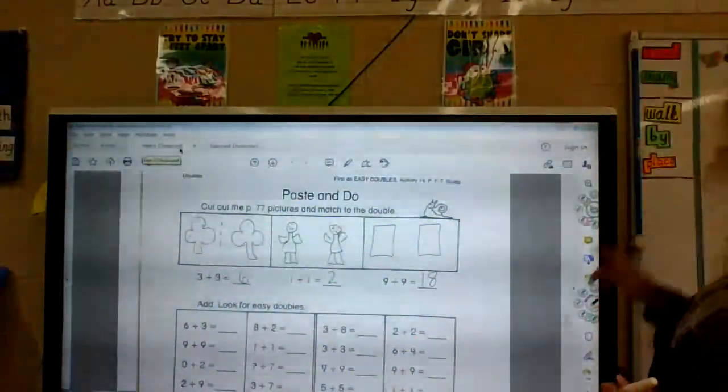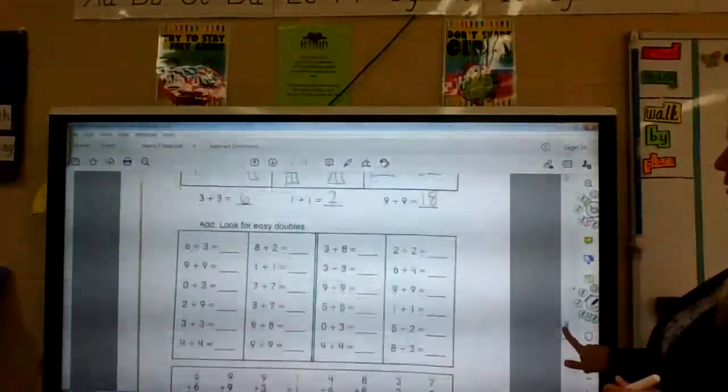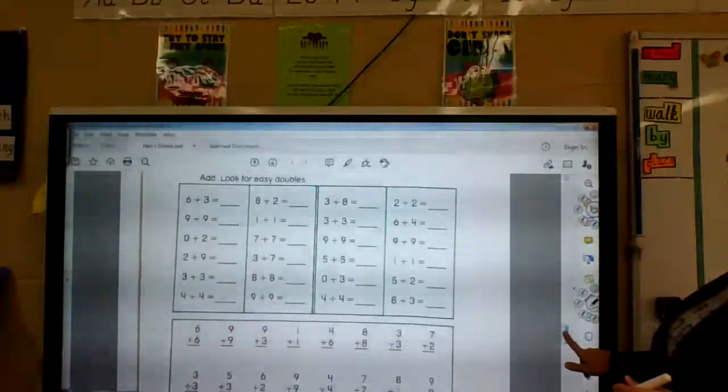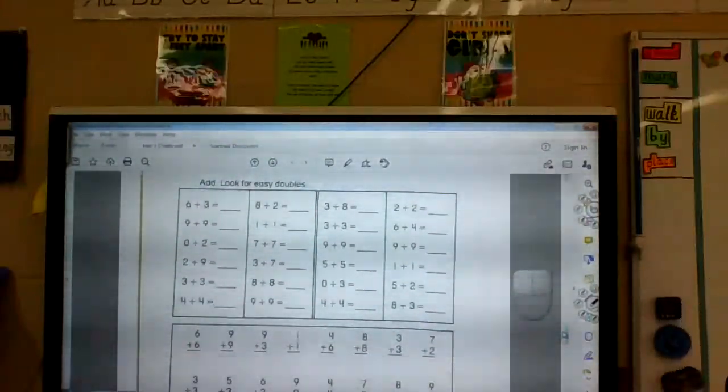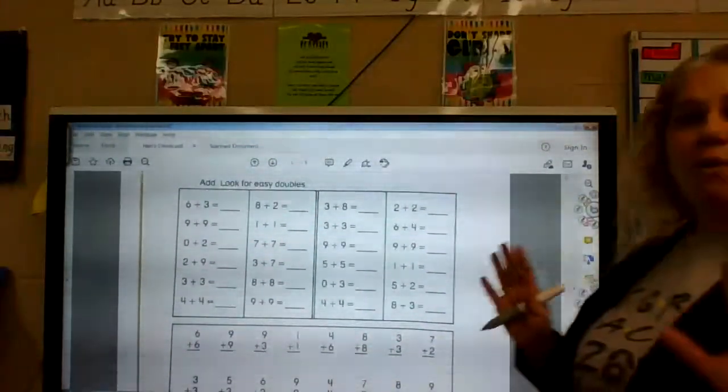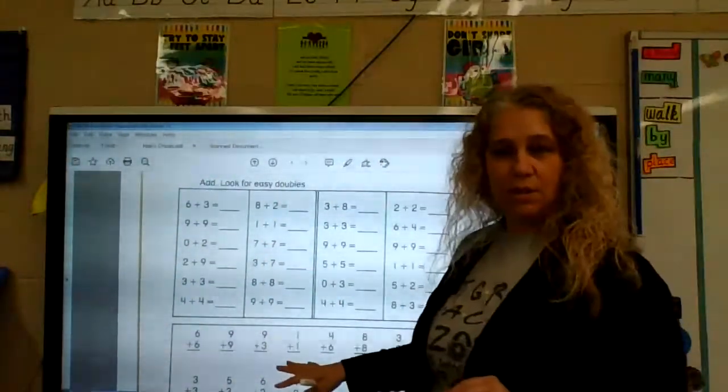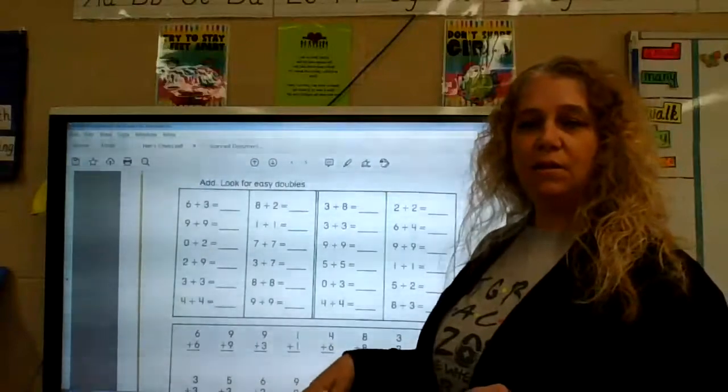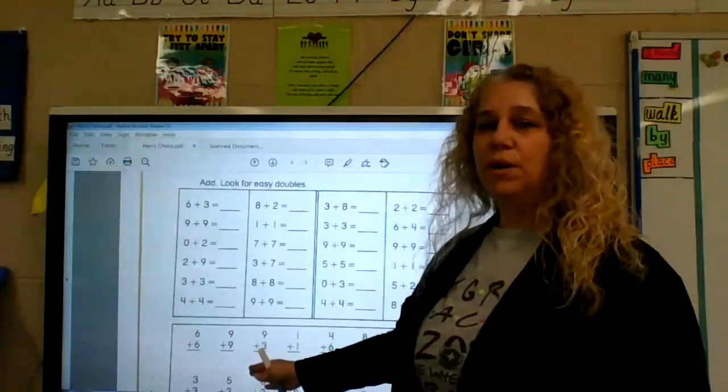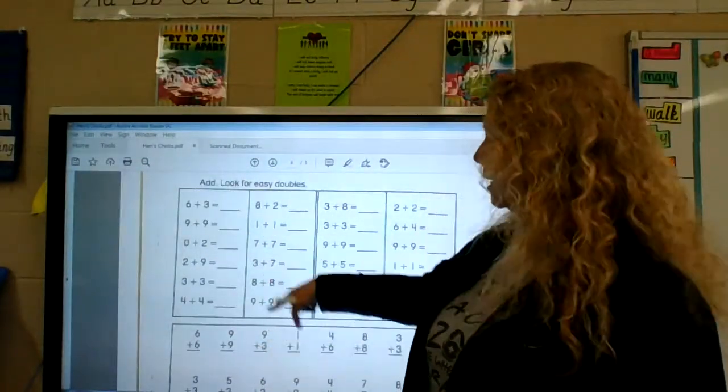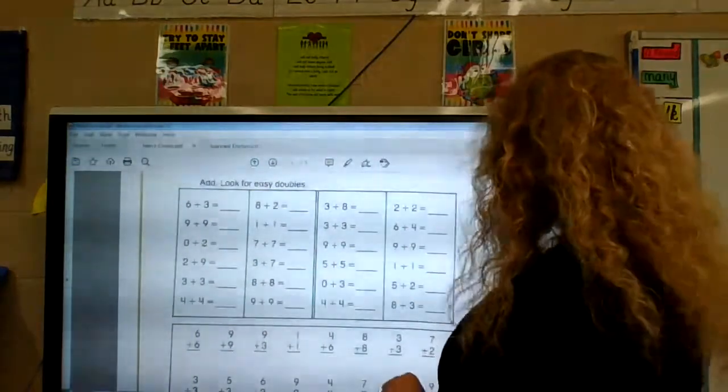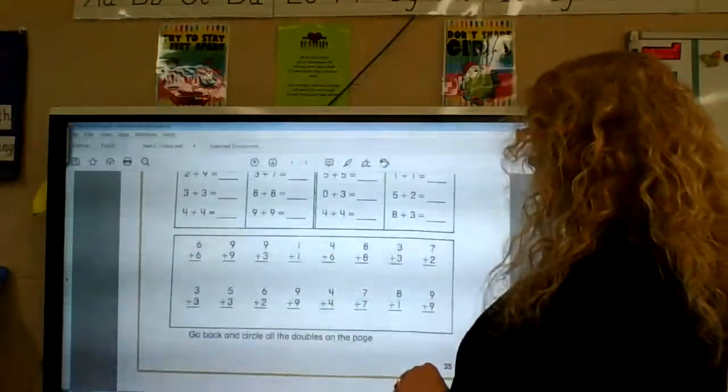Okay. So, three plus three is six. One plus one is two. Nine plus nine is eighteen. All right. So, for the bottom, let's see what it says. It says, add. Look for easy doubles. So, it's how you want to do it. You can go through and do the doubles first. And then go back and do the others. Or you can just go in order. Just make sure you don't miss any.